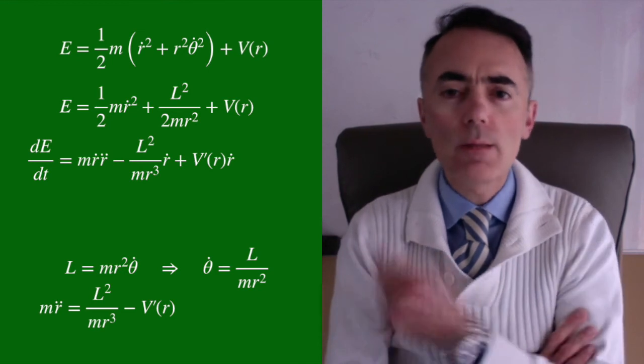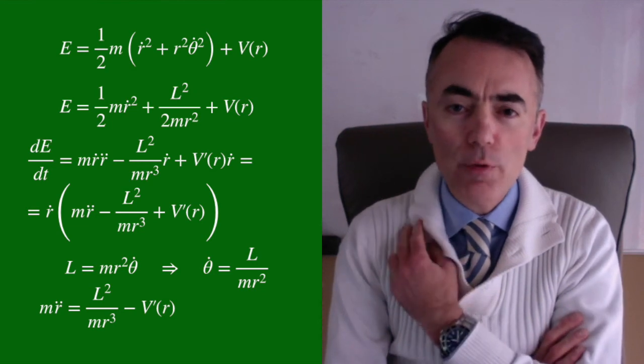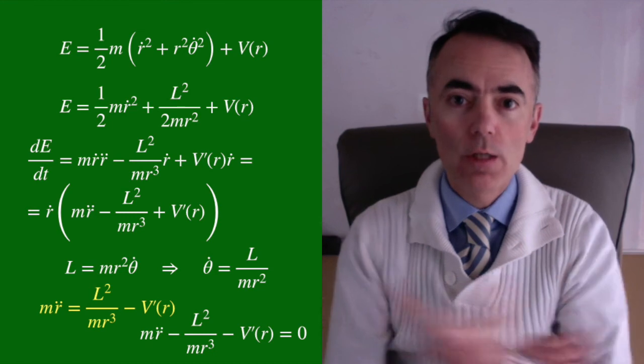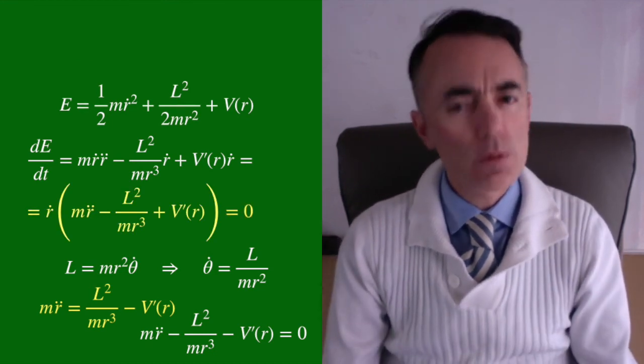But look at this closer. If we factor out r dot, what we have inside the parenthesis is just the equation from Lagrange, which happens to be zero. So now we have that the energy under this central force is also conserved.